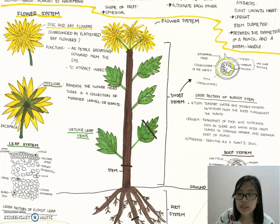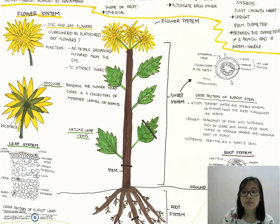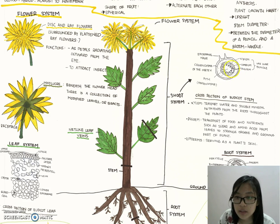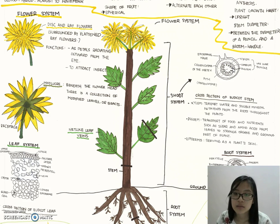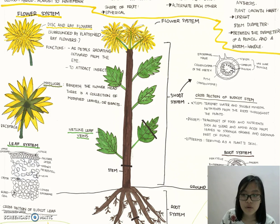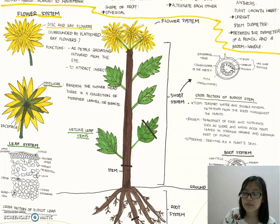The xylem is the inner part, which transports water and soluble mineral nutrients from the roots throughout the plant. The phloem is shaped like a seed between the xylem, and it transports food and nutrients such as sugar and amino acids from leaves to storage organs and growing parts of the plant.